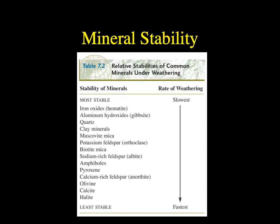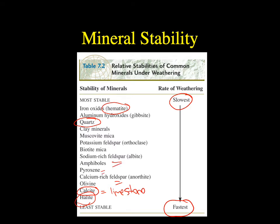Not all minerals react equally. Some of the most stable minerals — like quartz or hematite — have an extremely slow rate of weathering. Others are unstable and have a very fast rate of weathering: salt, calcite (which makes limestone), feldspars, and pyroxenes. Quartz is very stable, which is why many beach sands are made of almost nothing but quartz. We don't often see beaches made of calcite or halite because they tend to break down by chemical means very quickly.